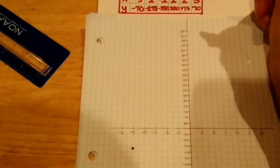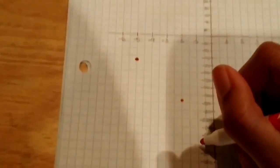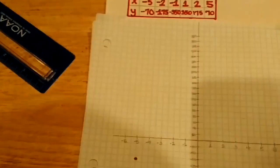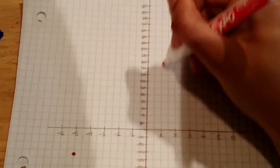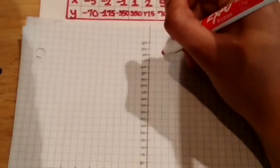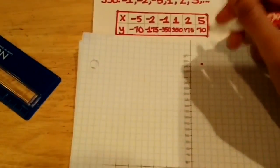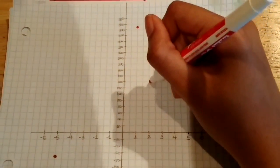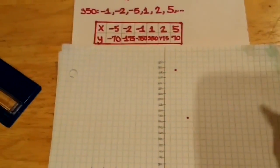The next one is at negative 1, negative 350. So you go back 1 and down to 350. Next point is at 1, 350. So you go over 1, up to 350. Where is that? And the next one is at 2, 175. So you go over 2, up 175.